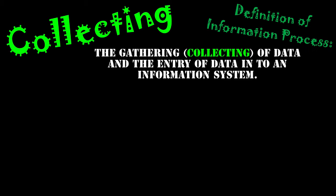So what is the definition of this information process? It is the gathering and collecting of data, and then it's the entry of this data into an information system. So it's a twofold process — it's how we get the data and then how we enter it into the information system.